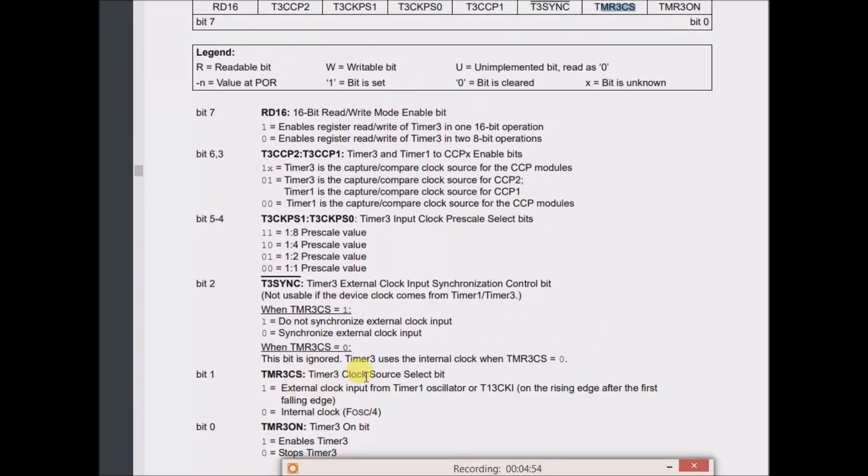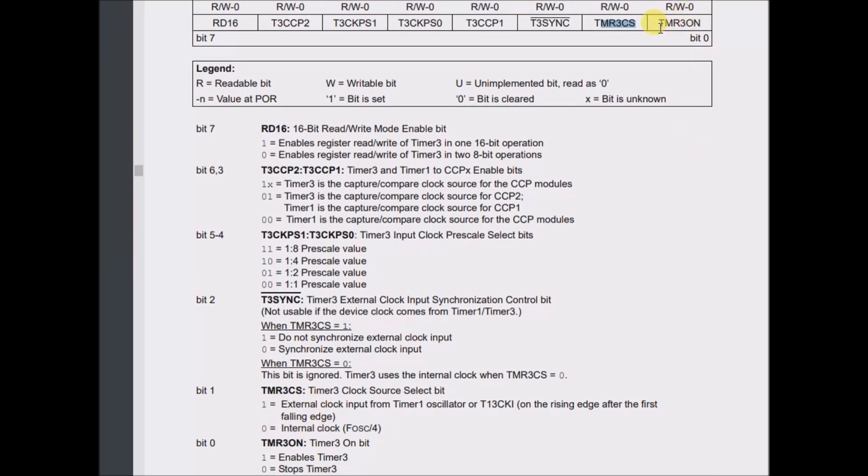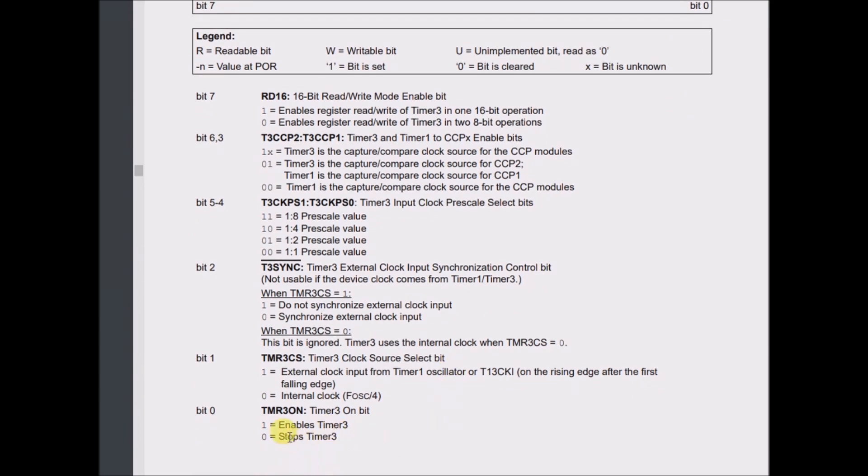And then, External Clock Source Select Bit, External Clock or Internal Clock. Zero, TMR3 On. Enables Timer or Stops Timer.